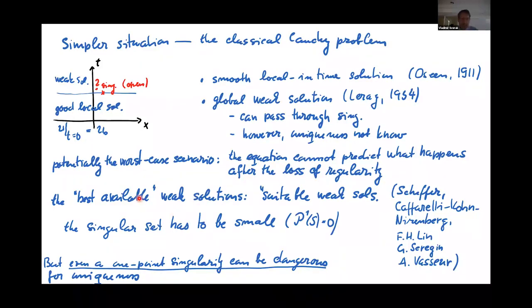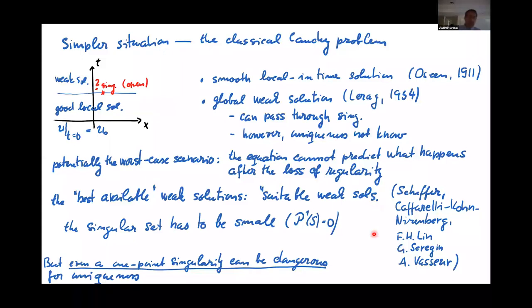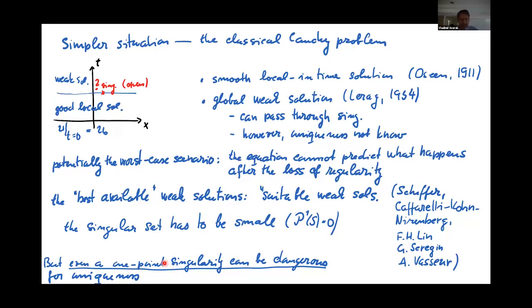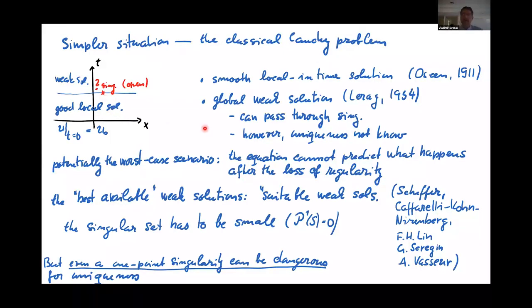We have partial regularity theory for the best available weak solutions, starting with Scheffer and Caffarelli-Kohn-Nirenberg with further simplifications. We have solutions that are regular on a very large set — the set of singularities is very small. But even a one-point singularity can potentially destroy uniqueness, and then the equation no longer predicts what will happen after. From that point of view, the Navier-Stokes model would be incomplete if it cannot predict the future.